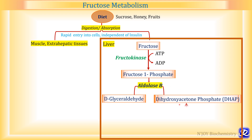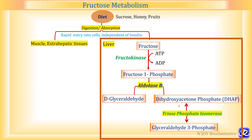Dihydroxyacetone phosphate can be isomerized to form glyceraldehyde 3-phosphate by the enzyme triose isomerase — a reaction similar to glycolysis. Glyceraldehyde can also be converted to glyceraldehyde 3-phosphate by the enzyme triokinase. So ultimately in fructose metabolism in liver, intestine and kidney, there is formation of both dihydroxyacetone phosphate and glyceraldehyde 3-phosphate.